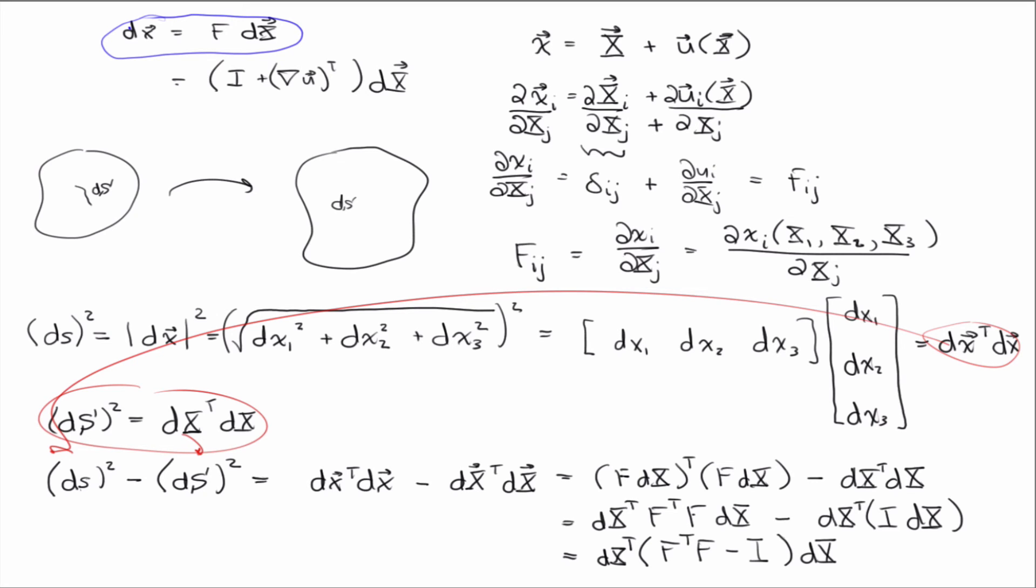And we're going to define this thing, we're going to define it as 2E, where E is a Lagrangian strain. Okay? So just so I don't have one new page with one equation on it, I'll just write it over here. E, which is the Lagrangian strain, is equal to one half F^T F minus I. Okay. Okay. That is called the Lagrangian strain. It's also known as the Green-Saint-Venant strain. Named after the, I think Green in 1841 and Saint-Venant in 1844 or something independently derived this strain measure.